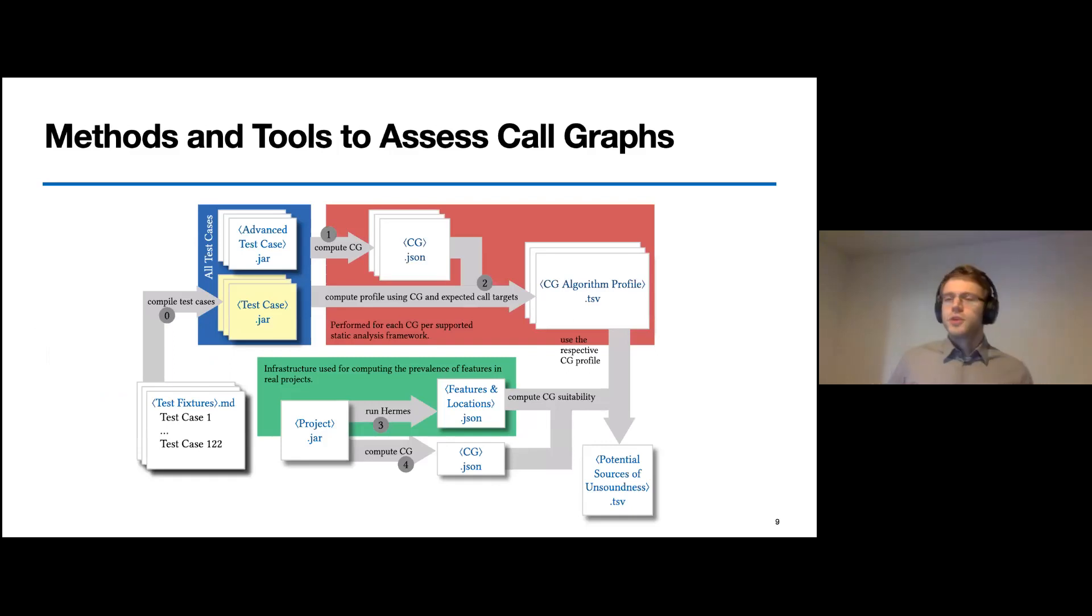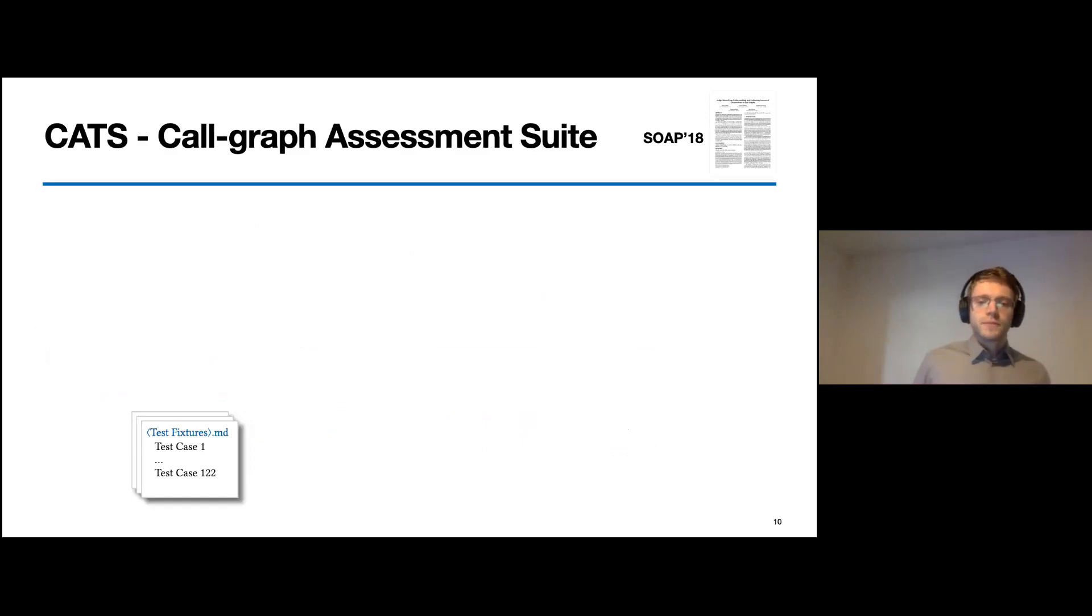At this point, you don't have to understand the complex picture as a whole. I will iteratively guide you through the figure now and slowly build it up. Let's start with the foundation of our tool chain, our call graph assessment and test suite, in short, CATS. CATS foundation is a large collection of 102 test cases, which we designed after studying the JVM specification and also state-of-the-art call graph frameworks.